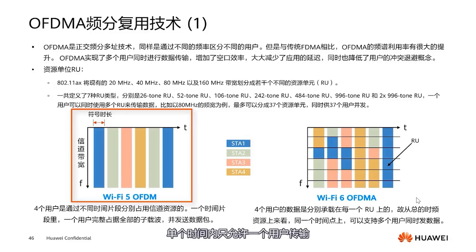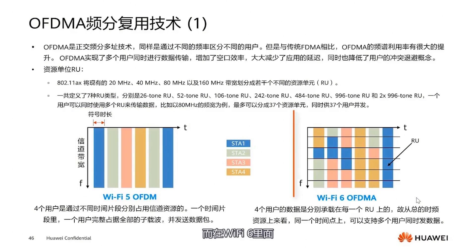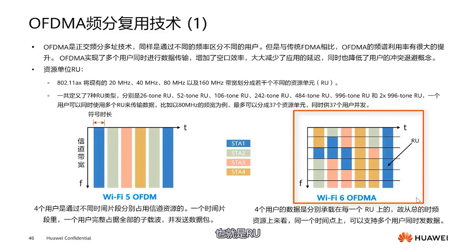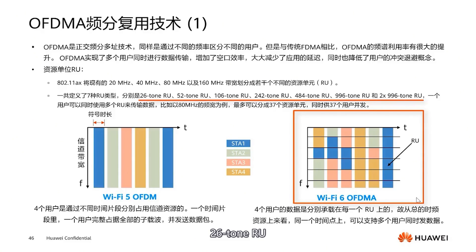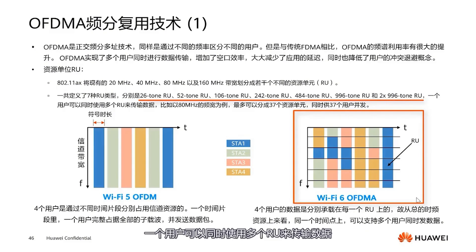But in Wi-Fi 6, we fragment the channel resources — this time-frequency resource block is also known as RU, or resource unit. We have defined seven different types of RUs: 26-tone RU, 52, 106, 242, 484, 996, and 2×996. A user can use multiple RUs simultaneously to transmit data, and up to 37 users can concurrently transmit. The aim is to significantly enhance our resource transmission efficiency.